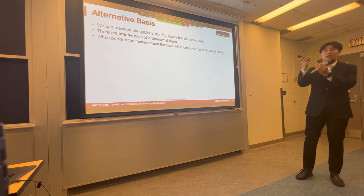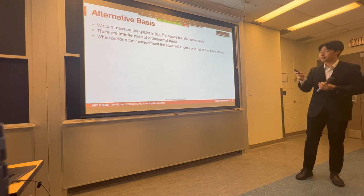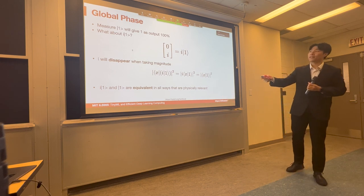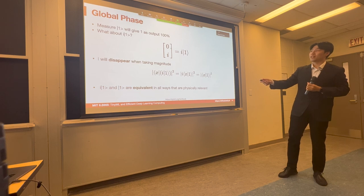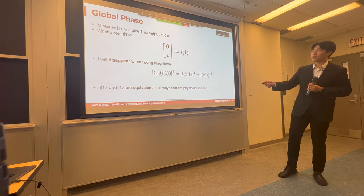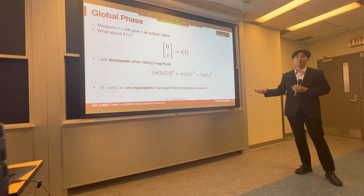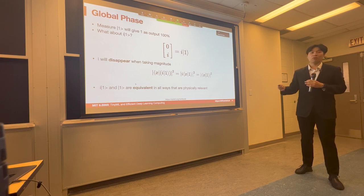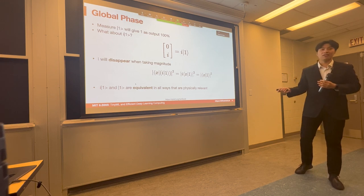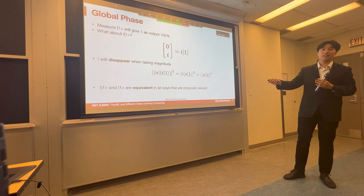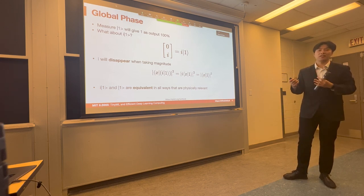There will be a global phase for the state. For example, if we have i|1⟩, the measurement outcome on the one state: if we do this computation, the magnitude of i is just one, so there is no effect on the final measurement outcome. That means i|1⟩ and |1⟩ are actually equivalent in all physically relevant ways. The global phase is undetectable, so two states that differ only by a global phase are identical from our point of view.